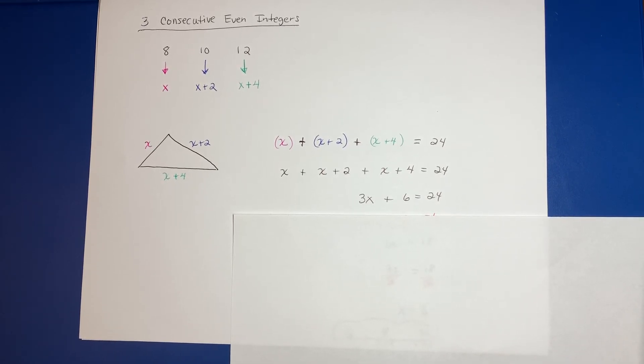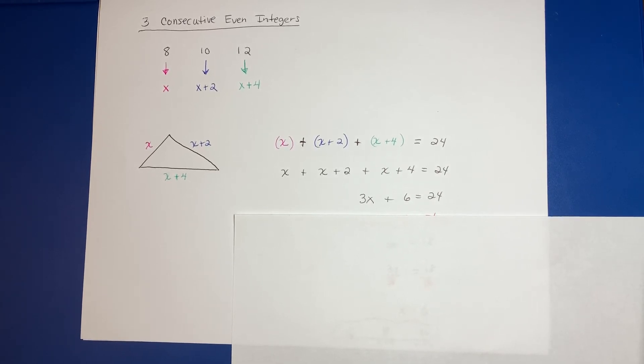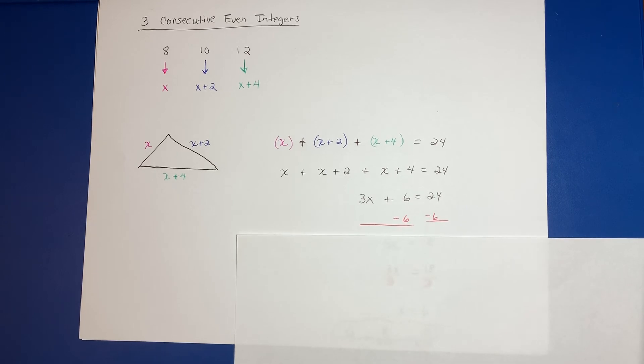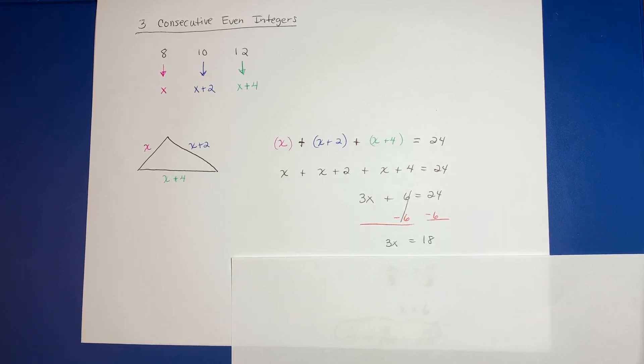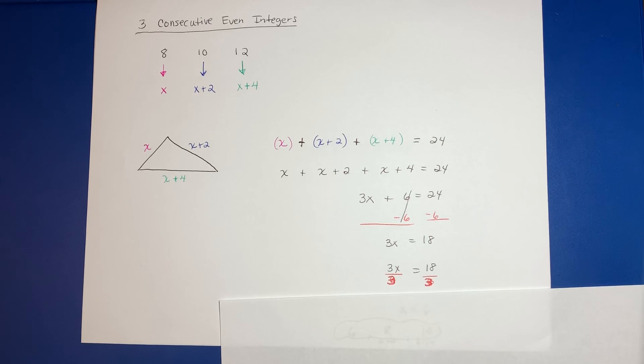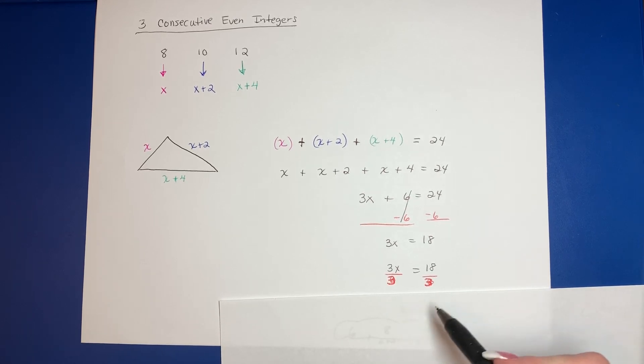Now I have to use that thing that says what you do to one side you've got to do to the other. So I would subtract the 6 on both sides. That's going to cancel that out. I get 3X is equal to 18.